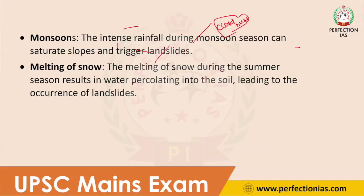The next cause is melting of snow. The Himalayas host many glaciers such as Gangotri and others. During summer, the snow melts and contributes water into the soil, which leads to the occurrence of landslides. So, melting of snow during summer is also an important cause for landslides in the Himalayan region. These are the major causes of landslides in the Himalayas.